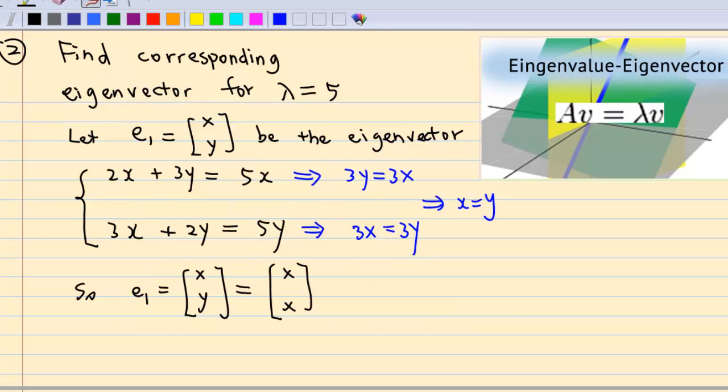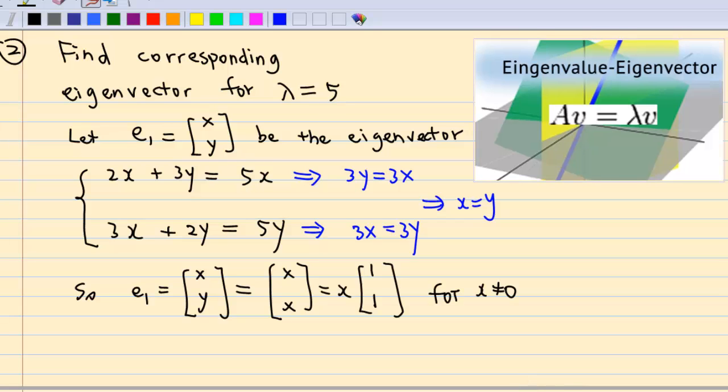Since y is equal to x, the eigenvector E1, which is equal to xy, is equal to xx. Factor out of x, we have x times 1, 1. For x not equal to 0, since eigenvector cannot be 0 vector.